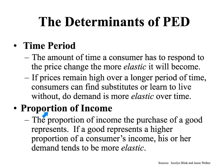The fourth determinant is portion of income — specifically, the portion of a consumer's income that the purchase of a good represents. If a good represents a higher portion of the consumer's income, his or her demand tends to be more elastic. The more expensive something is, the more likely they are to stop using it. A good example might be foreign holidays — if you're spending $3,000–$4,000 on flights to go to another country and the price goes up even more, you're going to be more likely to drop that, as opposed to something like paperclips that takes up very little of your income.